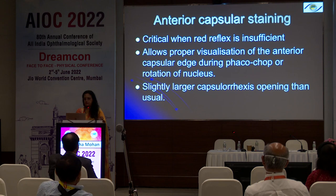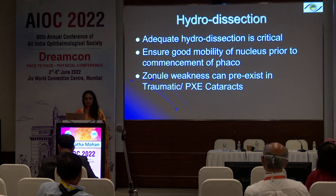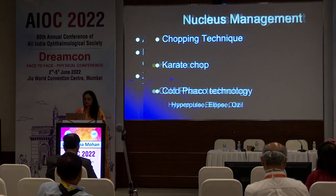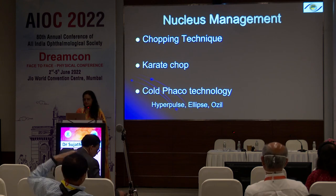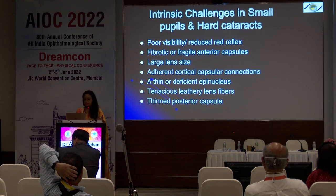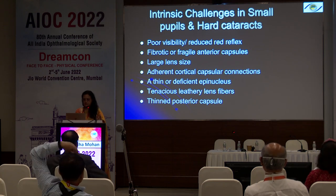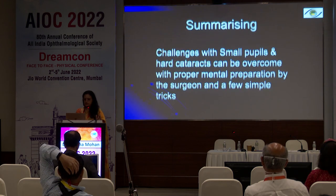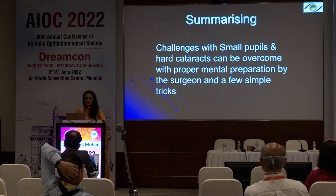The most important features are anterior capsular staining, good hydrodissection — you may need multiple quadrant hydrodissection — and nucleus management with a vertical chop, or cold FACO using hyperpulse, ellipse, or OZiL in these patients. The intrinsic challenges are poor visibility, fibrotic or fragile anterior capsules, large lens size, adherent cortical-capsular adhesions, deficient epinucleus, tenacious leathery fibres, and a thin posterior capsule. In spite of all these challenges with small pupil and hard cataract, they can be overcome by proper mental preparation by the surgeon and a few simple tricks. Thank you.